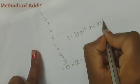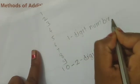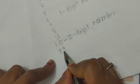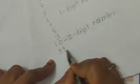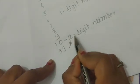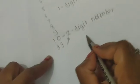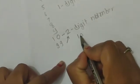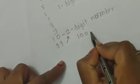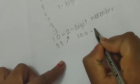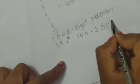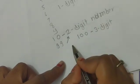Now, 10 has two digits — one and zero — so we call it a two digit number. Similarly, 99 also has two digits, so it is also a two digit number. And 100 has three digits — one, two, three — so we call it a three digit number.